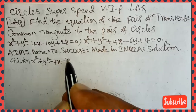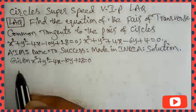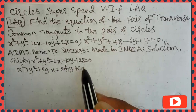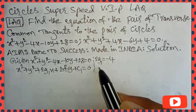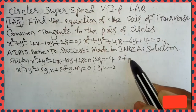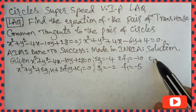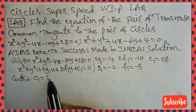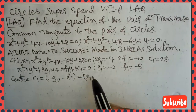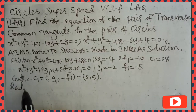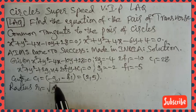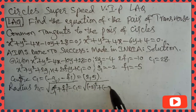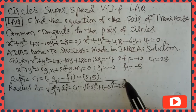Solution. The given first circle is x² + y² − 4x − 10y + 28 = 0. This is in the form x² + y² + 2g₁x + 2f₁y + c₁ = 0. Comparing x-coefficients: 2g₁ = −4, so g₁ = −2. Comparing y-coefficients: 2f₁ = −10, so f₁ = −5. Comparing constant terms: c₁ = 28.